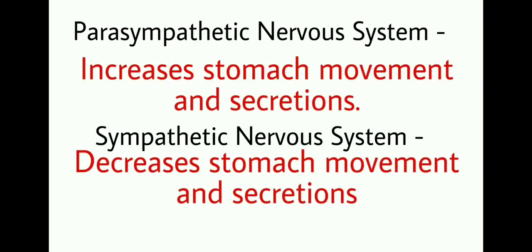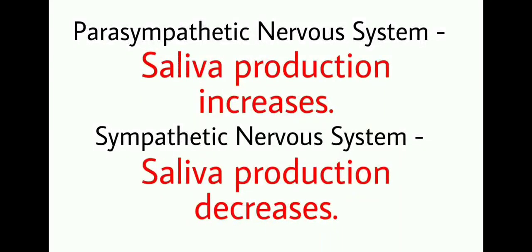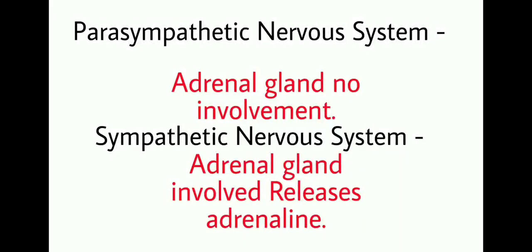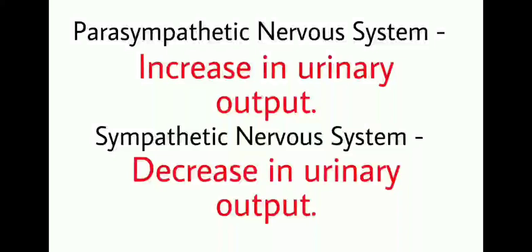Parasympathetic activity increases stomach movement and secretions, while sympathetic nervous system activity decreases stomach movement and secretions. Saliva production decreases with the sympathetic nervous system, whereas saliva production increases with the parasympathetic nervous system. No adrenal gland involvement is seen with the parasympathetic nervous system, while the sympathetic nervous system involves the adrenal gland, which releases adrenal hormones. Urinary output increases with parasympathetic activity, while sympathetic nervous system activity decreases urinary output.